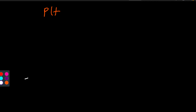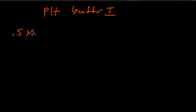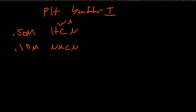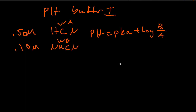Now let's look at buffer type 1, where we have a weak acid and a weak base. Let's say the concentration of HCN is 0.5 M and the concentration of NaCN is 0.1 M. HCN is the weak acid; NaCN is the weak base. For a buffer type 1 problem, we use the Henderson-Hasselbalch equation: pH = pKa + log([base]/[acid]).